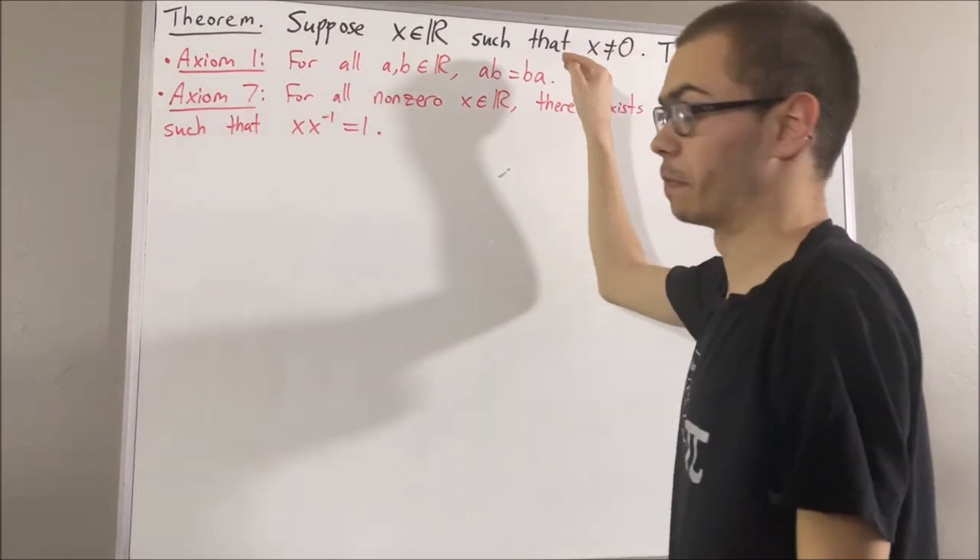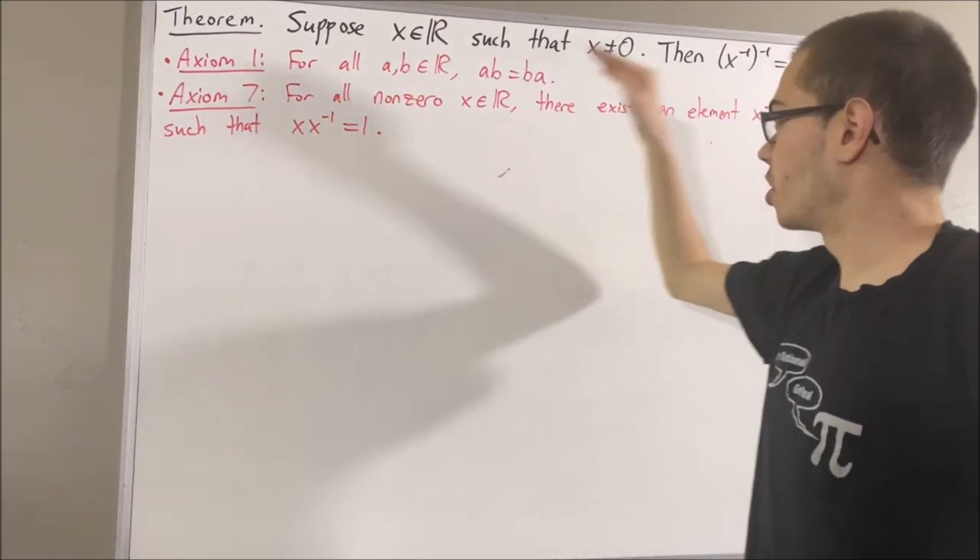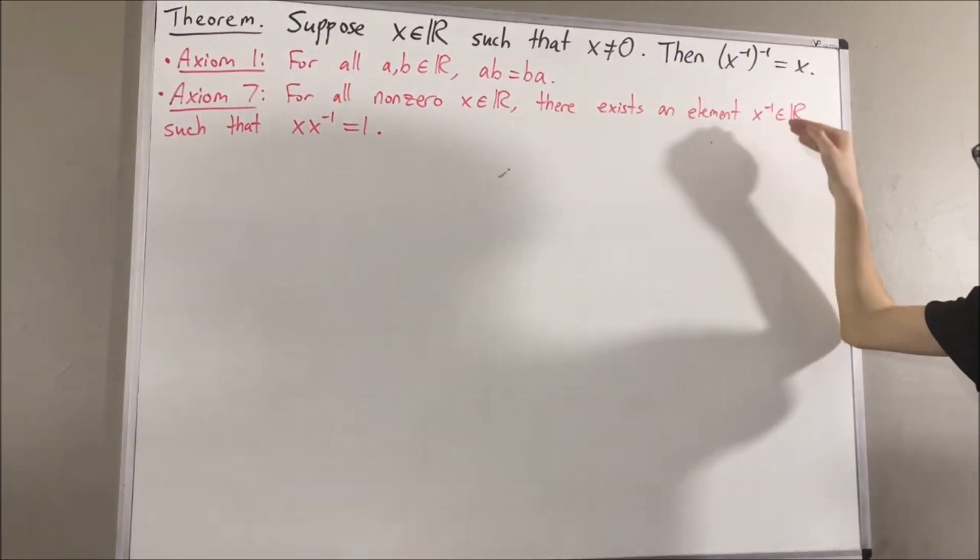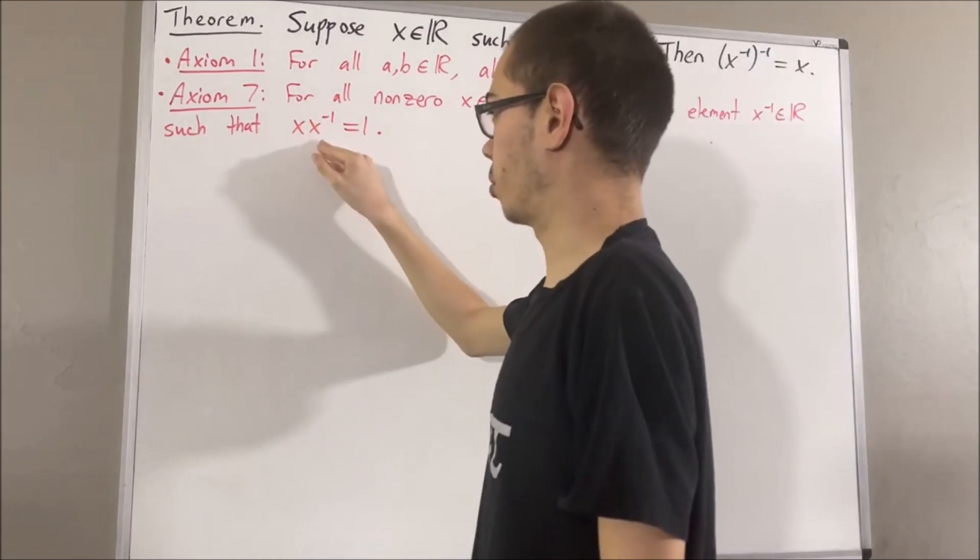Axiom 1 is just the commutative law. Axiom 7 tells us, for all non-zero real numbers x, there exists a real number, which we call the reciprocal of x, that satisfies the property that x times the reciprocal of x is equal to 1.